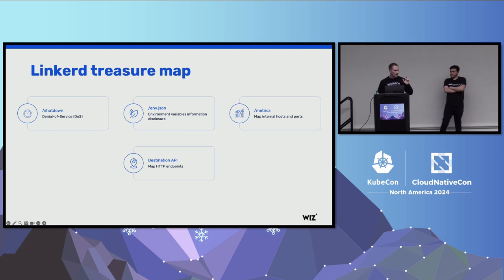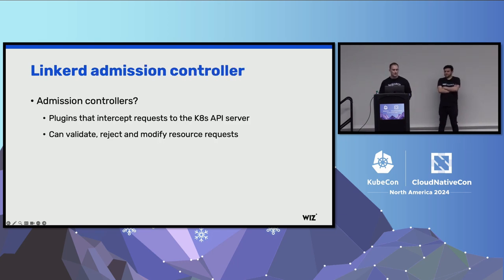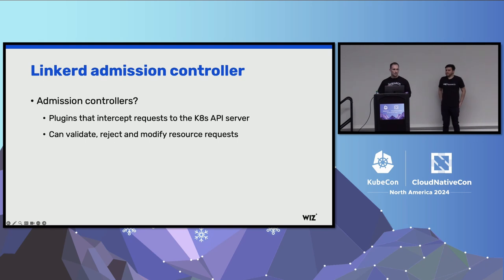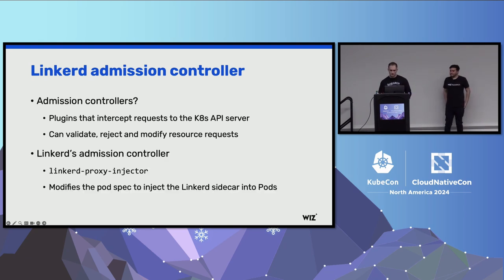There was also one question that always bugged our mind: how does the Linkerd sidecar container magically appear in every pod in a Linkerd-enabled environment? Apparently, Linkerd uses something called admission controllers — plugins that intercept requests before they reach the Kubernetes API server. This means that when you type kubectl create pod, before the request reaches the Kubernetes API, it goes through a series of admission controllers that can validate, reject, and modify the resource request. Linkerd does exactly that — it has the Linkerd proxy injector admission controller that modifies the pod spec to inject the Linkerd sidecar into that pod before the Kubernetes API creates it.